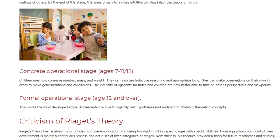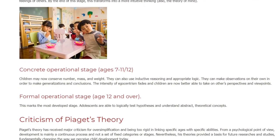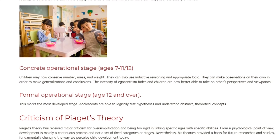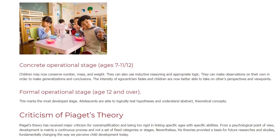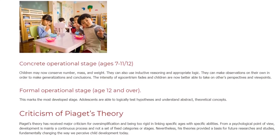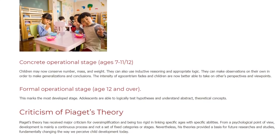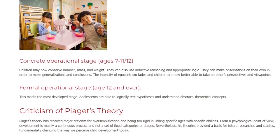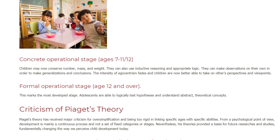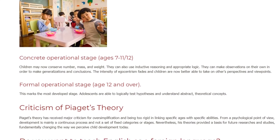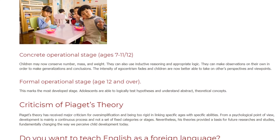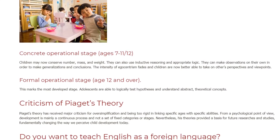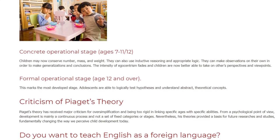The Formal Operational Stage begins at age 12 and over. This marks the most developed stage, in which adolescents are able to logically test hypotheses and understand abstract, theoretical concepts.